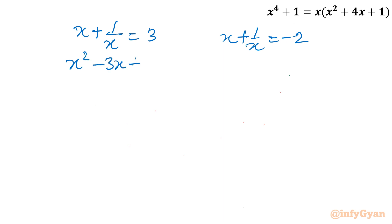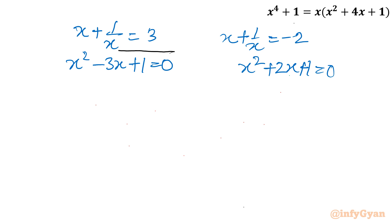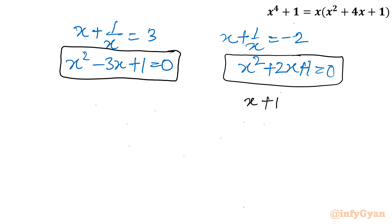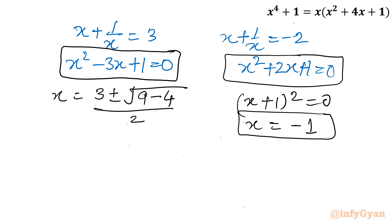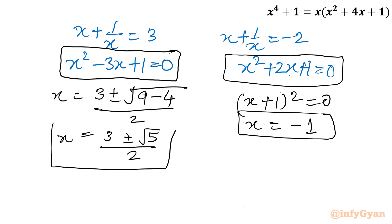For x² + 2x + 1 = 0, this is (x + 1)² = 0, giving x = -1 with multiplicity 2. For x² - 3x + 1 = 0, applying the quadratic formula gives x = (3 ± √5) / 2. This is identical to the solution found by Method 1.